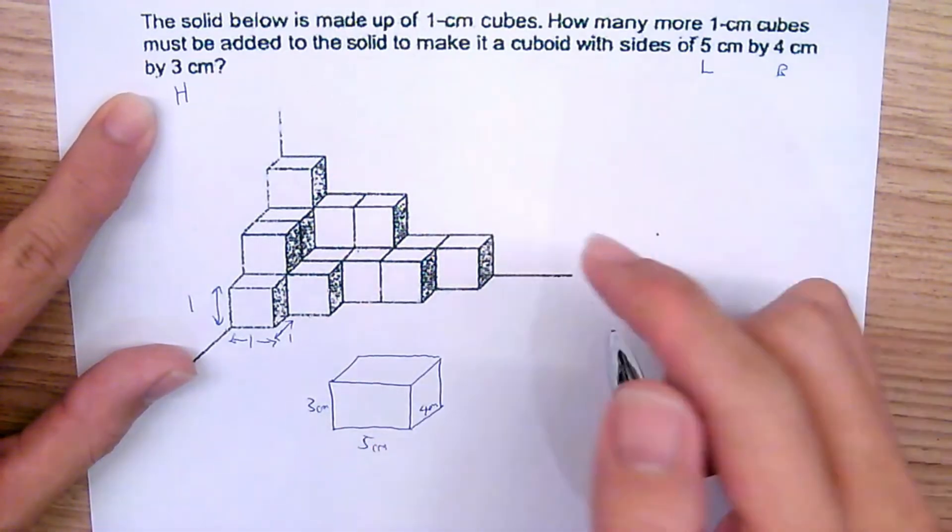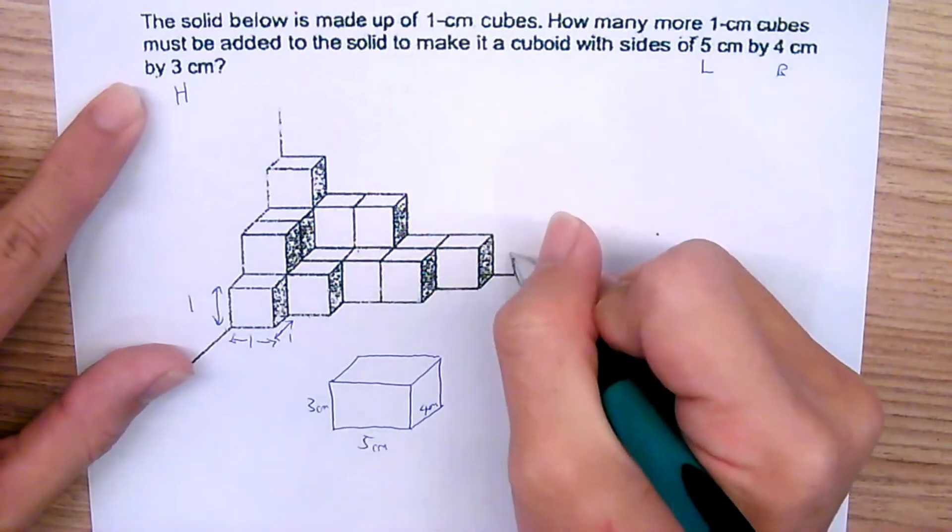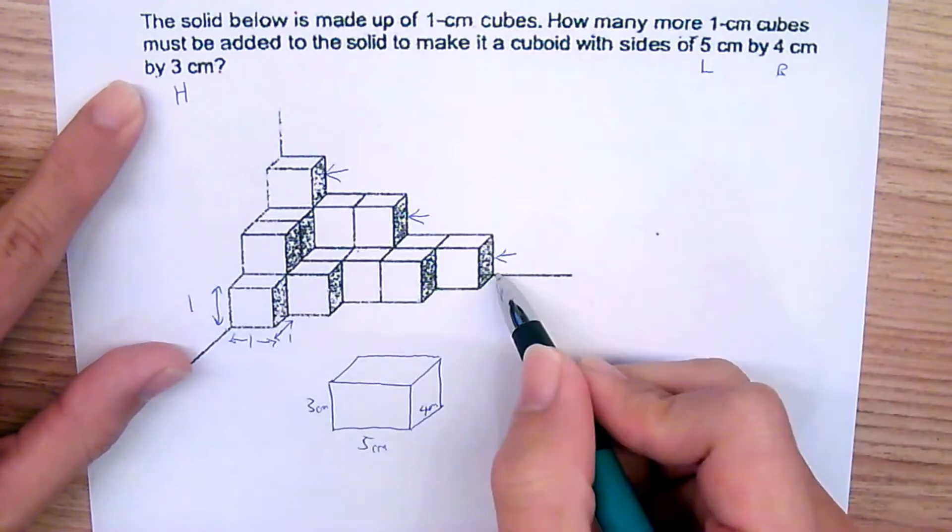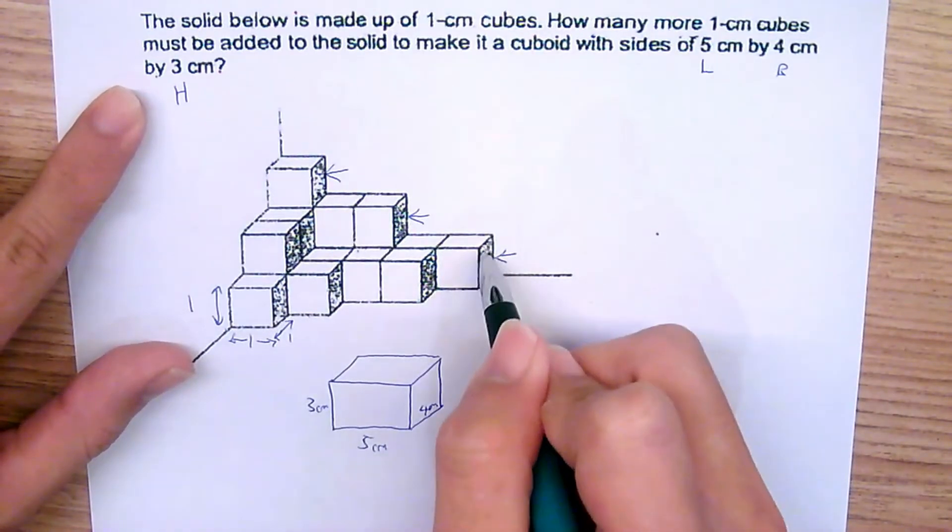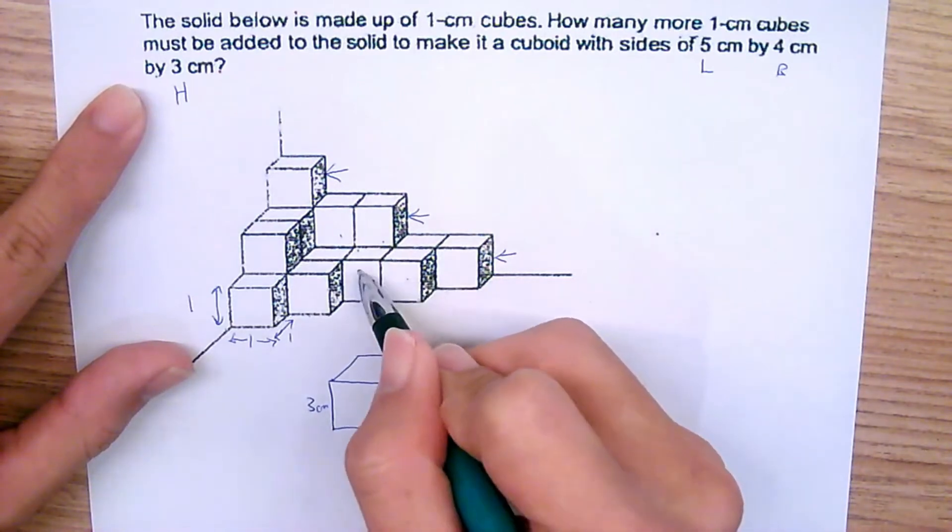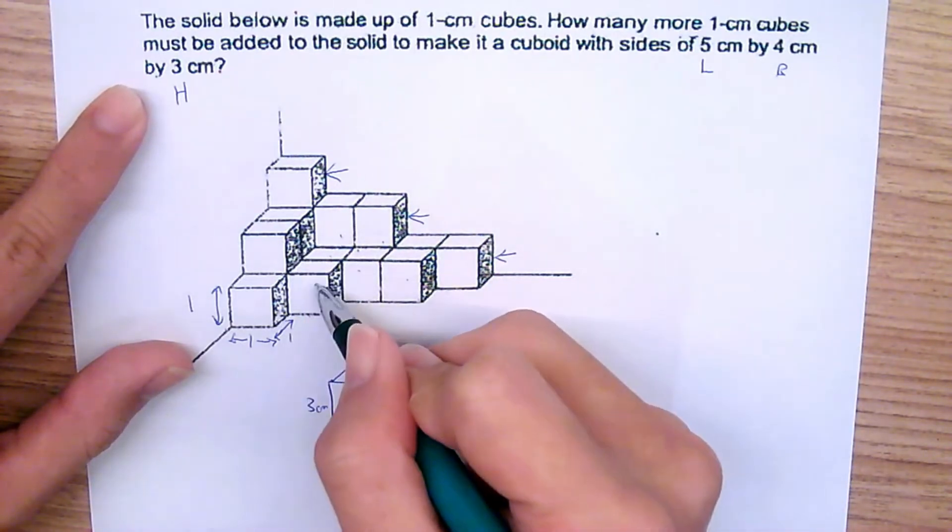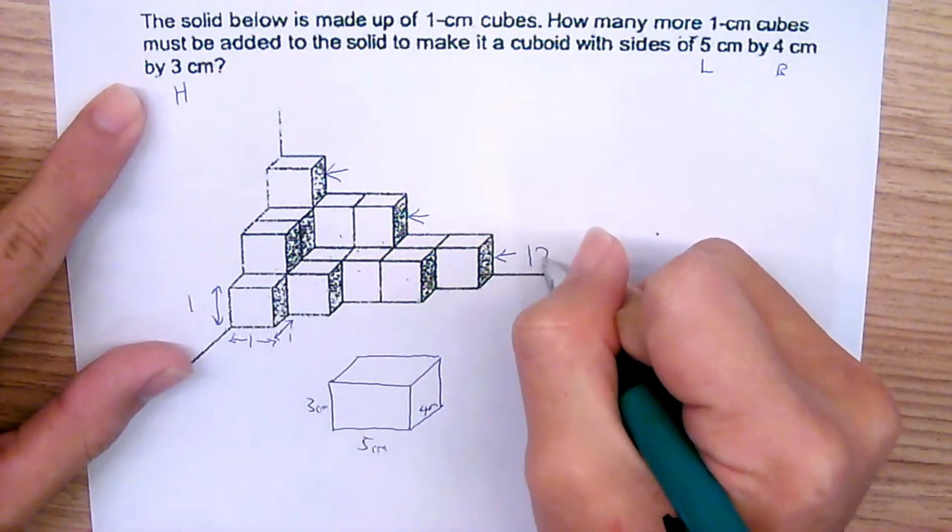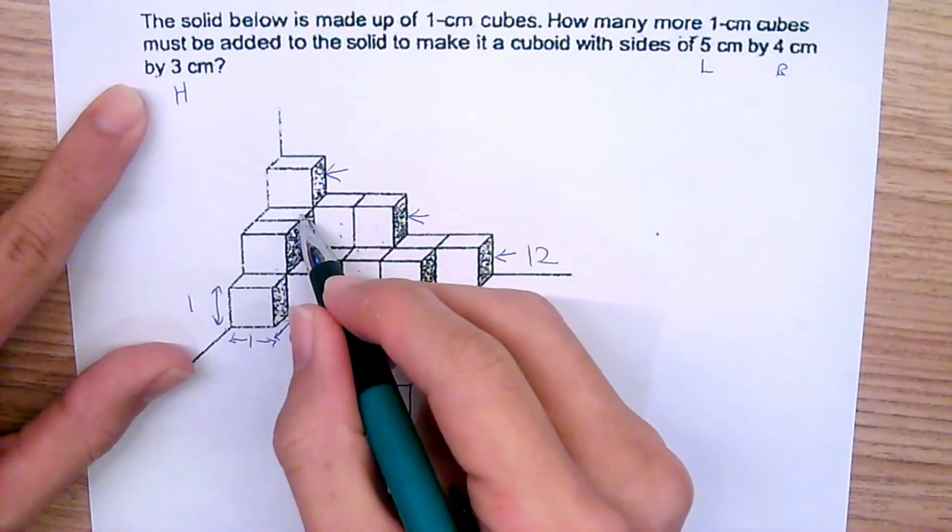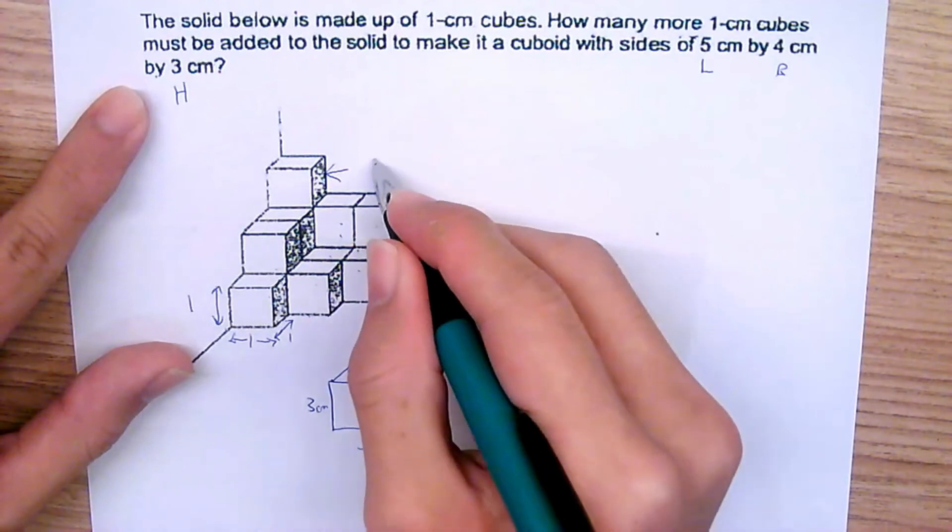Let's try to count how many cubes are there. We cut them in different levels: level one, level two, and level three. Level one, how many? Count from inside: 1, 2, 3, 4, 5 inside, 6, 7, 8, 9, 10, 11, 12. So there are 12 cubes. Second level: 1, 2, 3 inside, 4, 5, so it'll be 5. Here is just 1.